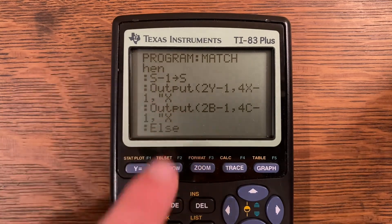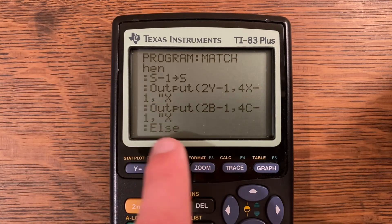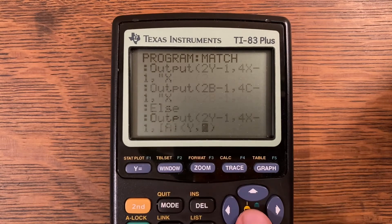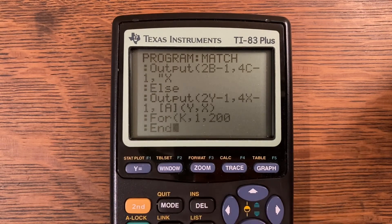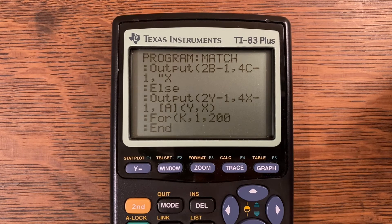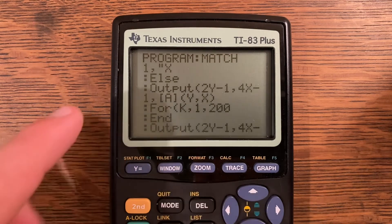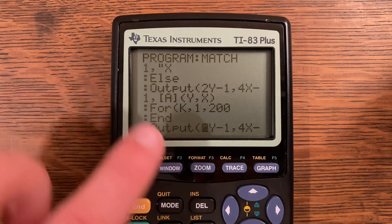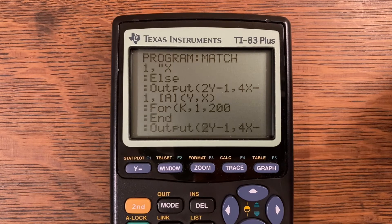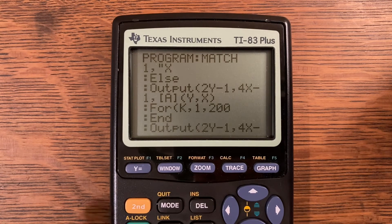Else, so if it's not equal to M, then we're going to do Output 2Y minus 1 comma 4X minus 1 comma matrix A at Y comma X. For K comma 1 comma 200, and what this is right here is it allows the screen to just pause for a second. You could use a pause there if you would like, but then the player has to click the enter key, so I just like this because it gives a nice aesthetic look and the player doesn't have to click the enter key again.